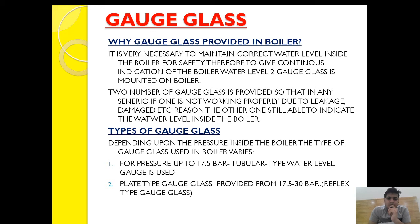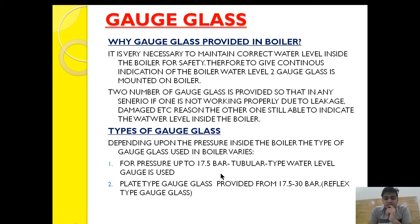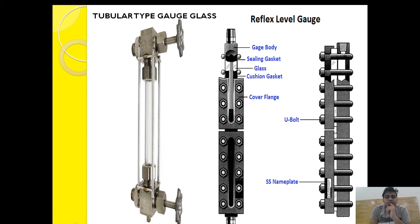Now let's see what types of gauge glass are provided in a boiler. Depending upon the pressure and type of the boiler, the type of gauge glass changes — as pressure and temperature increase, the gauge glass type changes. For example, for pressure up to 17.5 bar, a tubular type water level gauge glass is used. If the pressure is higher, a plate type gauge glass — mainly the reflex type — is used. Above 30 bar, other types are also used.